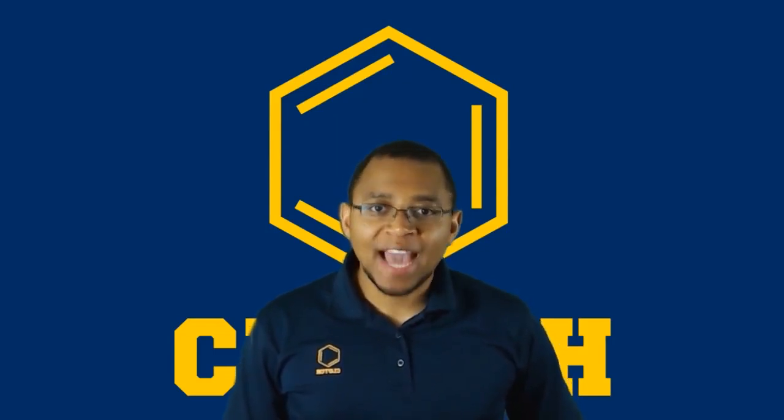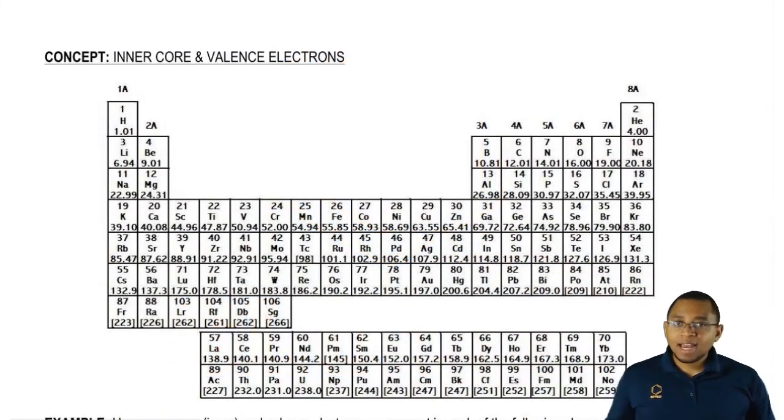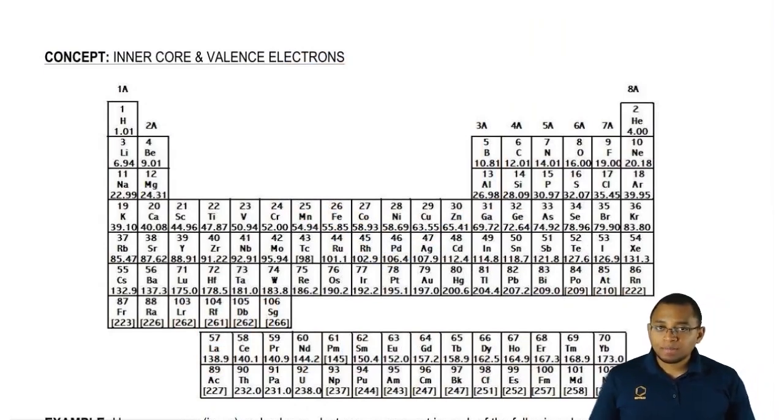We're going to learn the difference between inner core electrons and what are called valence electrons. Valence electrons are basically the electrons found in the outermost shell. The outermost shells are usually the electron orbitals with the biggest number.